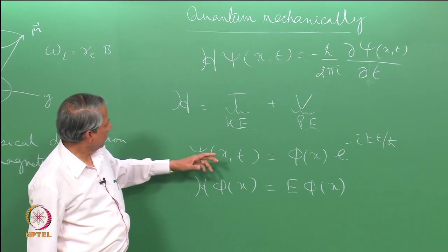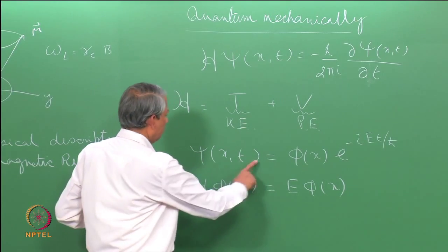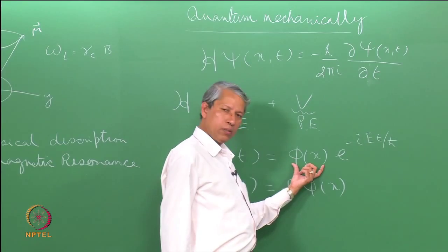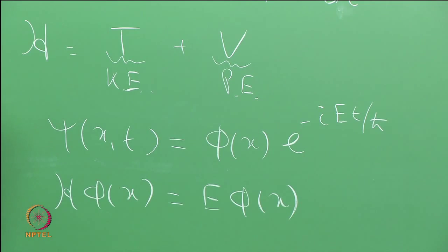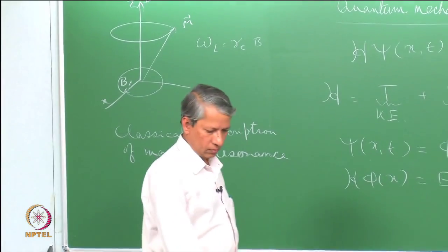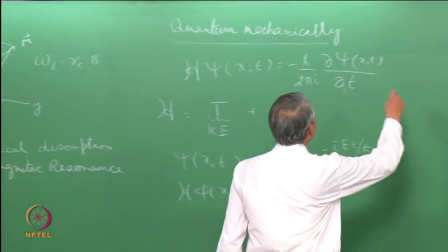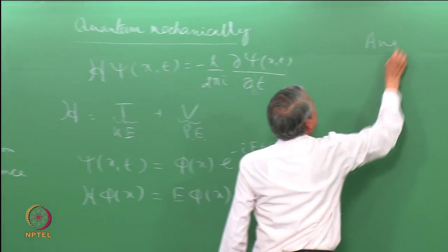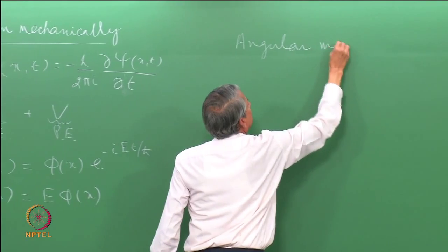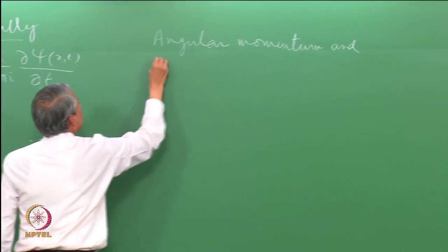This is a particular case when the potential energy is independent of time, giving an equation of this kind. The total wave function is a product of the space part and the time part, where E is the energy of the system. The other concepts we need to revise are angular momentum and its allowed values.